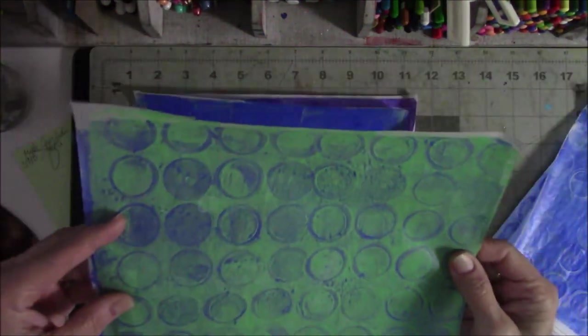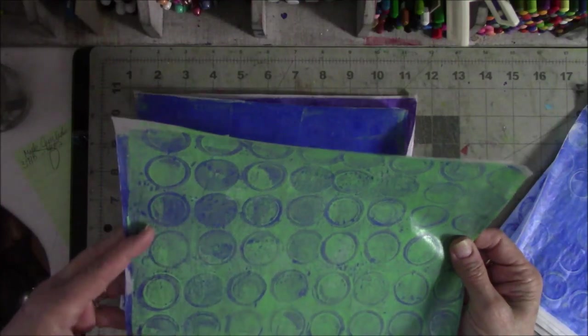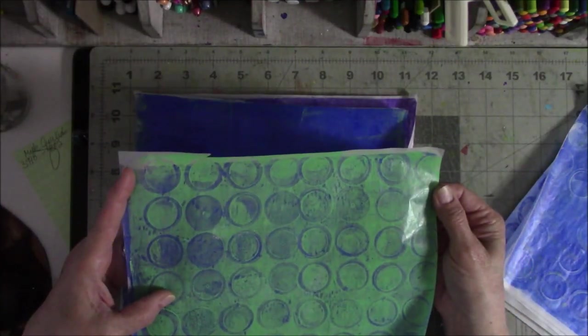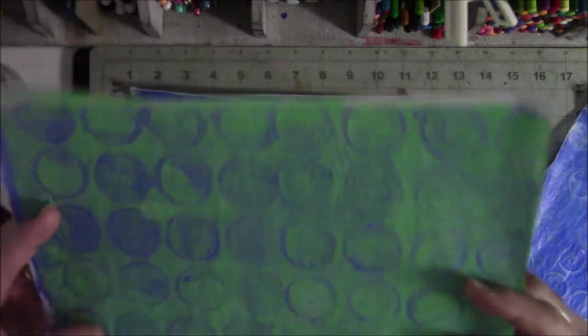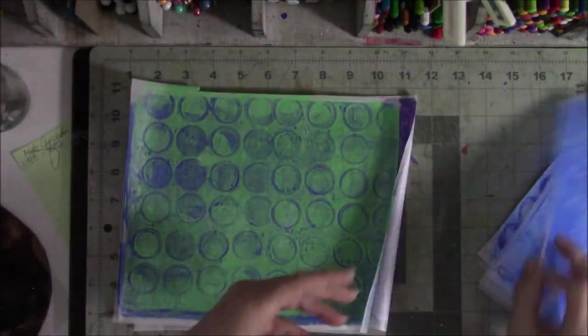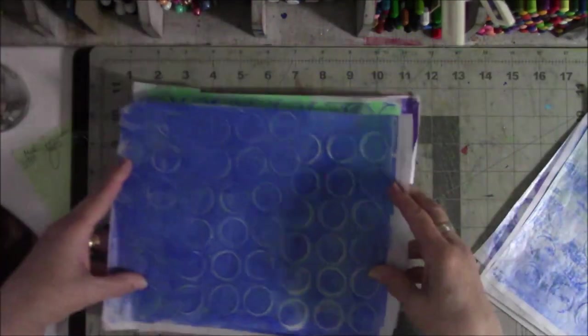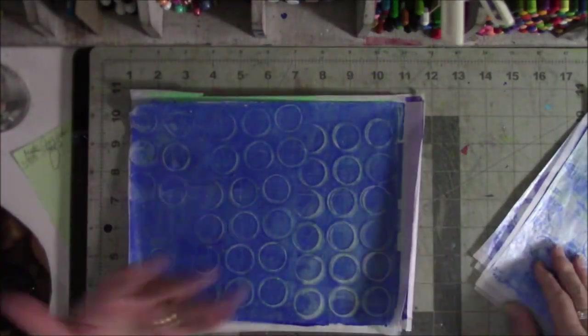All right. So this is a blue and a green. The base was, I think the base was on this one was green. And then I went over it with, I mean blue. And then I went over it with the green and they're all circles. There's nothing that's deviated, but this is what you can do with stuff from the house. It didn't cost one penny.